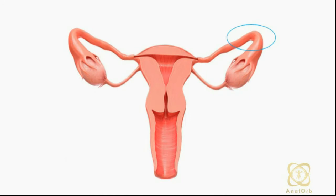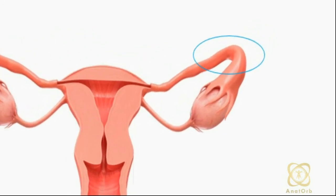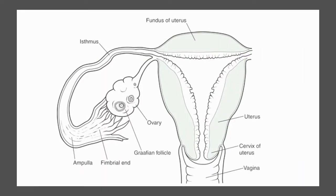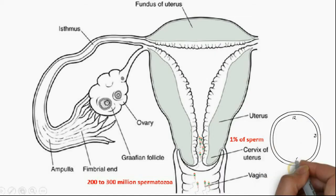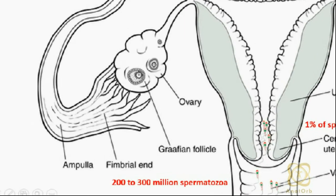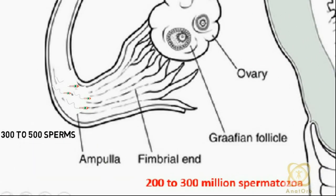Fusion of these gametes usually occurs in the ampullar region of the uterine tube. Of the 200 to 300 million spermatozoa deposited in the vagina, only 1% of sperm deposited enters the cervix, where they may survive for many hours.